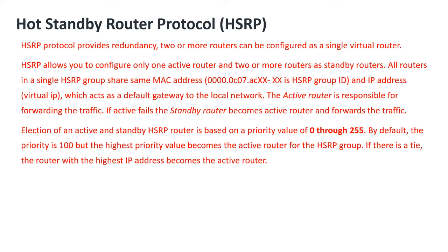The active router is responsible for forwarding the traffic. If the active router fails, the standby router becomes the active router and forwards the traffic. Election of an active and standby HSRP router is based on a priority value of 0 through 255.